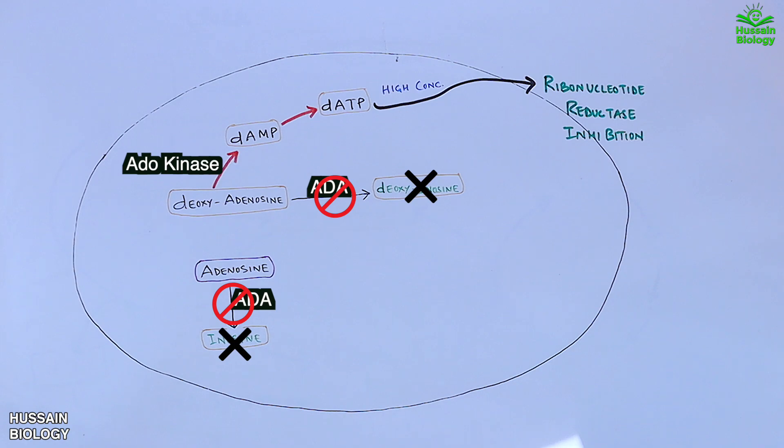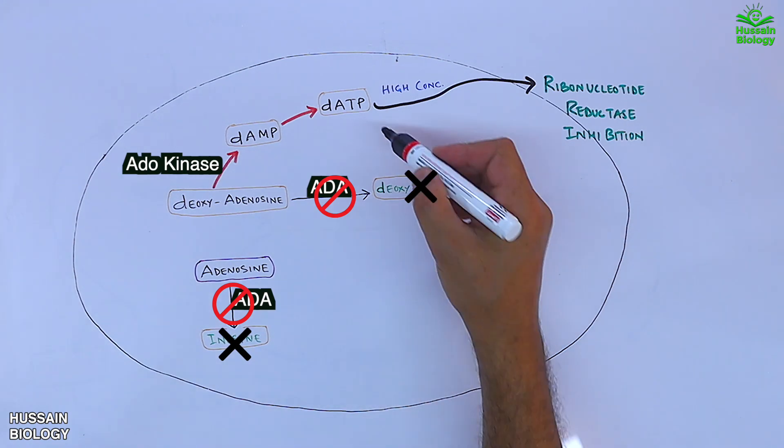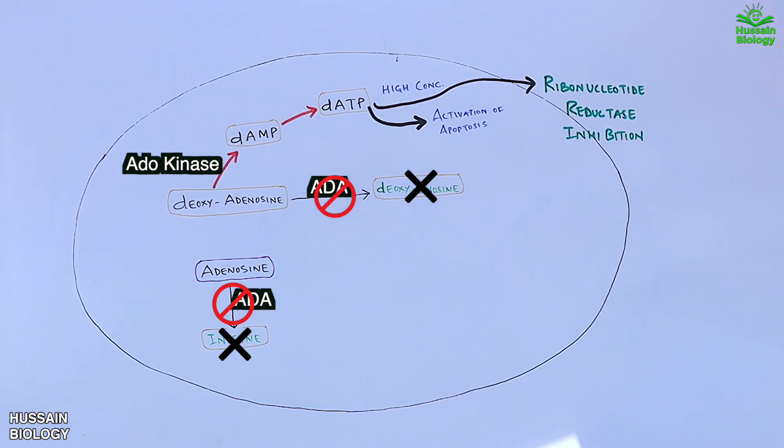But when it gets inhibited by the action of dATP molecules, DNA synthesis is halted or compromised. Secondly, we see this dATP molecule also mediates the activation of apoptosis that leads to death of the cell.